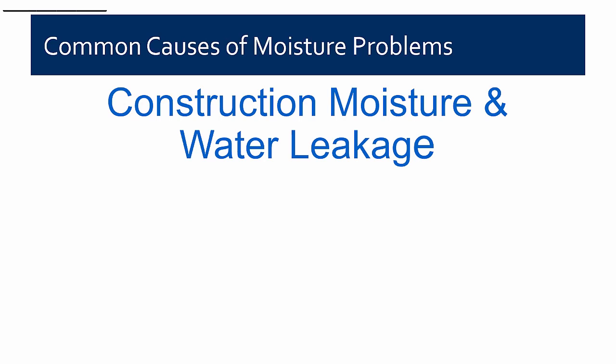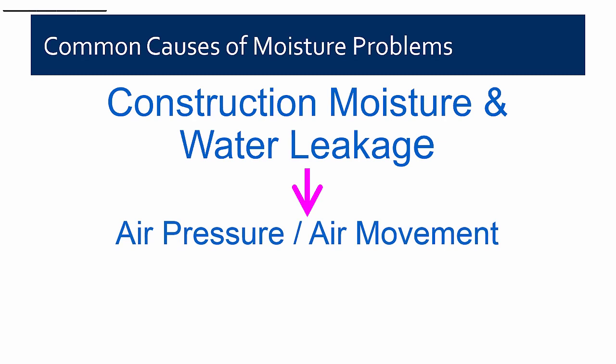When looking at moisture problems in a building, always start with the most obvious and rule those out first. In most cases, water leakage is often the cause — a leaky pipe, roof leakage, wall leakage, or construction moisture, especially in newly built buildings where water may have been trapped when insulation and membrane were installed. Construction moisture is probably still the number one cause. But the second cause is air pressure and air movement. If you haven't ruled out water leakage and construction moisture and it's a condensation-related problem, most likely it's related to air pressure differential and associated air movement.